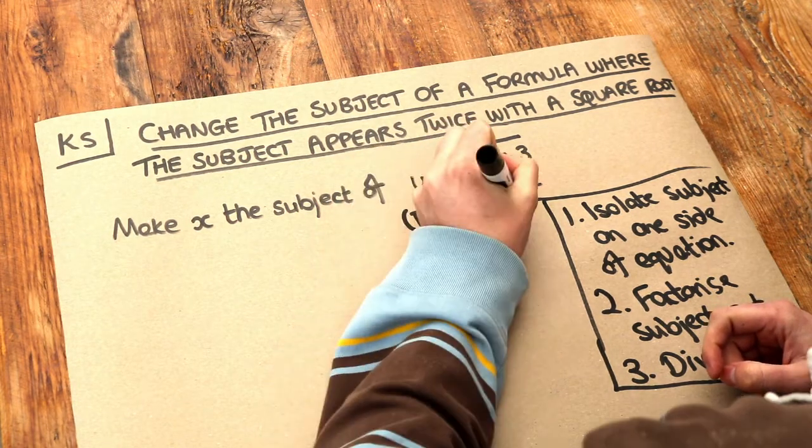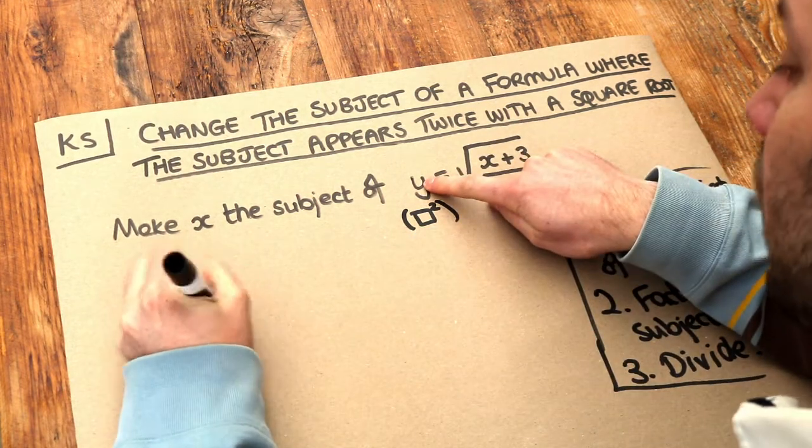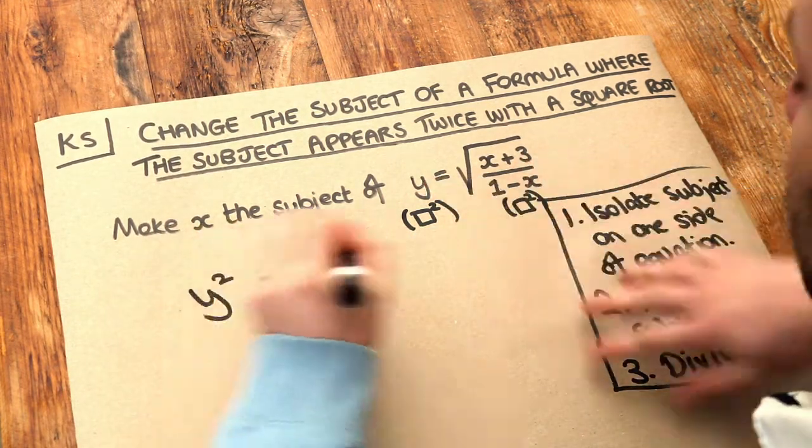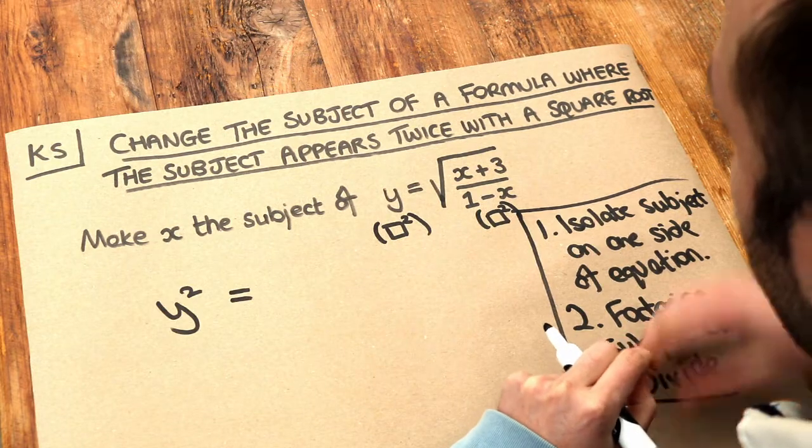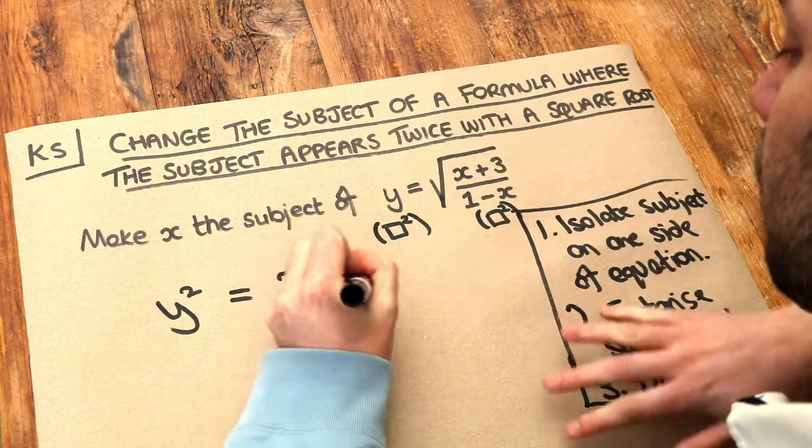If we square both sides of the equation, the left hand side just becomes y squared. And if we square the right hand side, we get rid of that square root leaving x plus 3 over 1 minus x.